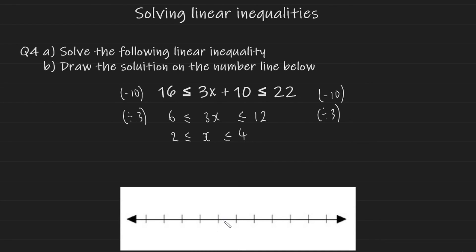To draw this compound inequality, write 2, 3, and 4 on the number line. Place filled circles above both 2 and 4, since the inequality has equals components. Instead of drawing arrows, draw a single line connecting the two circles. This makes sense because the solutions are all values between 2 and 4, and the filled circles indicate that 2 and 4 themselves are included as solutions.